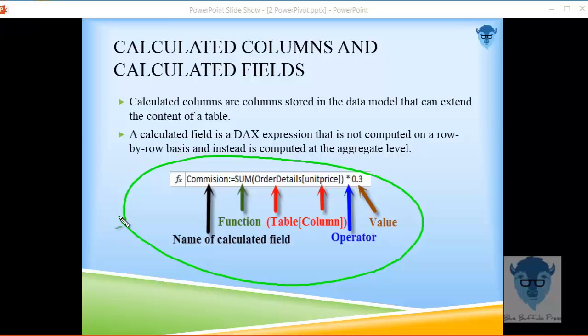Calculated field is a DAX expression. It's not computed on a row by row basis. Instead, it's computed at the aggregate level. A calculated field is evaluated in the context of the cell of the pivot table, whereas the calculated column we talked about earlier is computed on the row level of the pivot table.